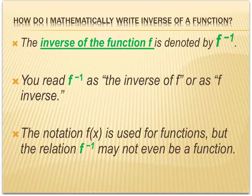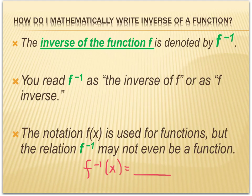When talking about the inverse of a function, we use the notation f to the negative 1 power, written f⁻¹. We don't say 'f to the negative 1 power' — we say 'the inverse of f' or 'f inverse.' Now normally f(x) notation is only used for functions, but f⁻¹(x) does not necessarily mean it is a function — it could just be a relation.